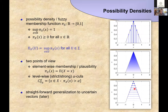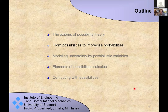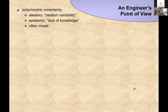There is naturally already a generalization to uncertain vectors, i.e., higher-dimensional uncertain variables. I'll talk about that a little later. So this covers the very basics of possibility theory.